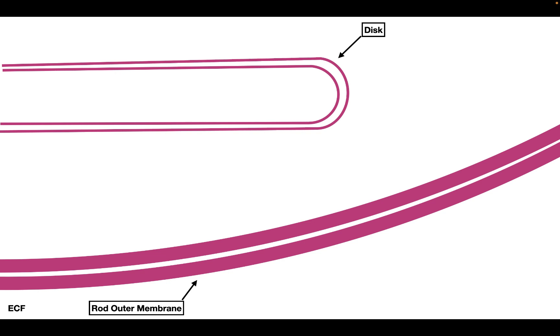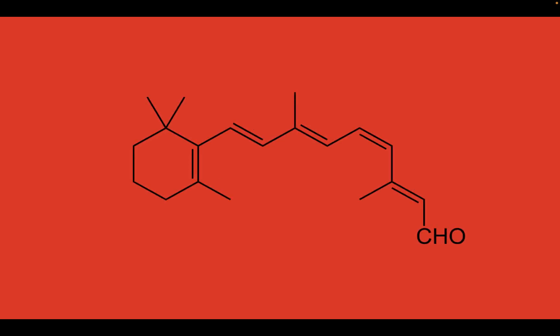Now inside the rod cell, you have a specific protein called rhodopsin. Rhodopsin is the protein that is going to respond to light. So when you have a photon come into the rod cell, the photon will go into rhodopsin and cause a change inside of it. The change occurs with a molecule that is bound to rhodopsin, and this molecule is called 11-cis-retinal.